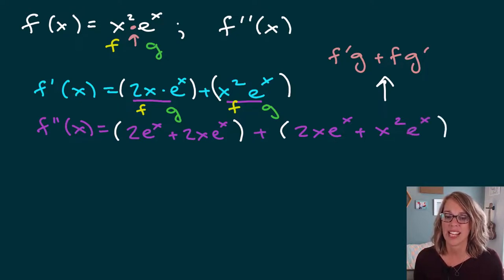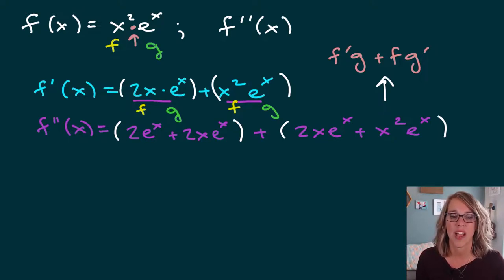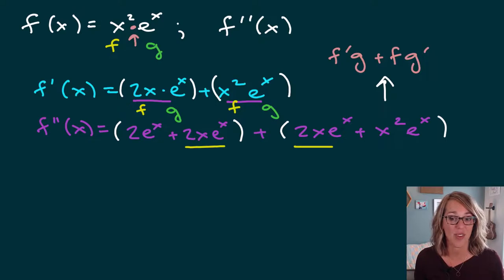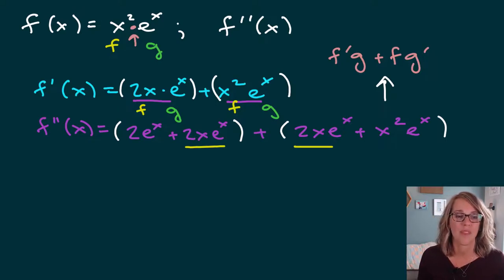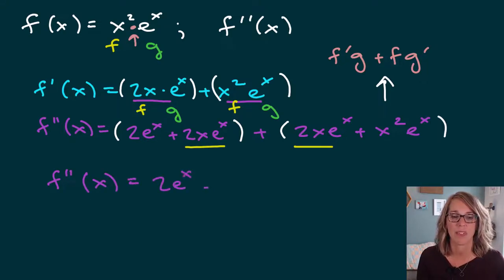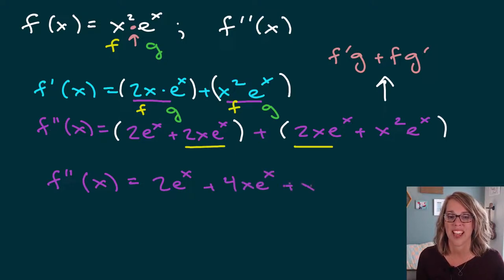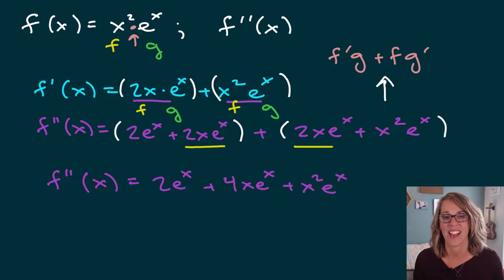You can see I've got a 2x e to the x and another 2x e to the x. So our second derivative, which I can rewrite, is 2 e to the x plus 4x e to the x plus x squared e to the x.